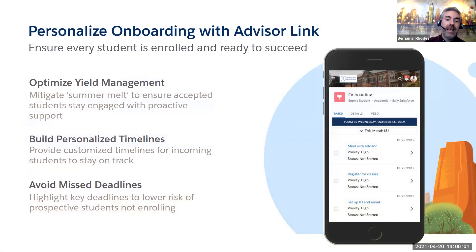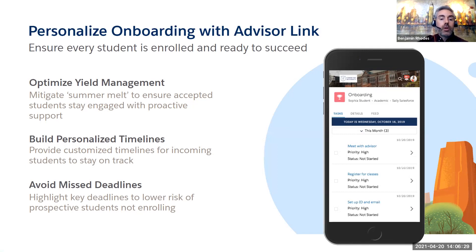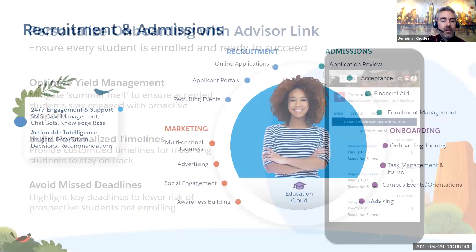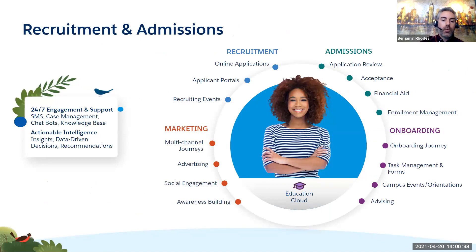At the heart of a connected journey is AdvisorLink. Within AdvisorLink, success plan templates enable trackable onboarding plans for students, customized to specific student populations. Admission staff can team up with financial aid, housing, and other staff to ensure that students know where and who to go to as they prepare for life as a student. Admitted students have a clear plan and detailed guidance in the form of a learning journey. Education Cloud for Recruitment and Admissions gives your team the tools needed to effectively attract and engage prospective students throughout the enrollment funnel with a full life cycle CRM.